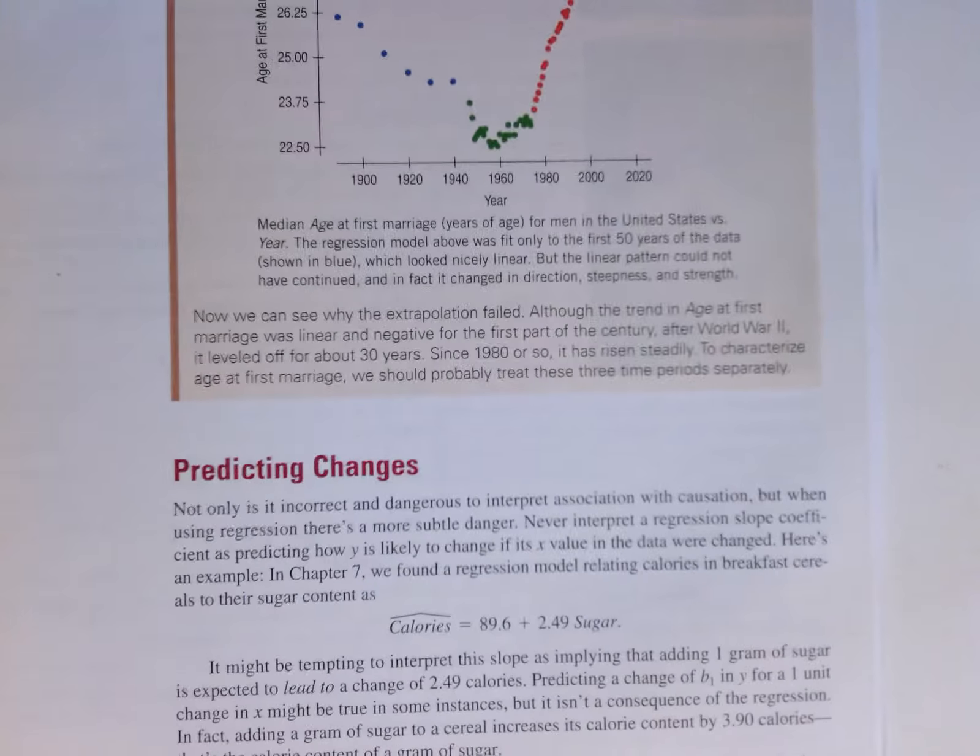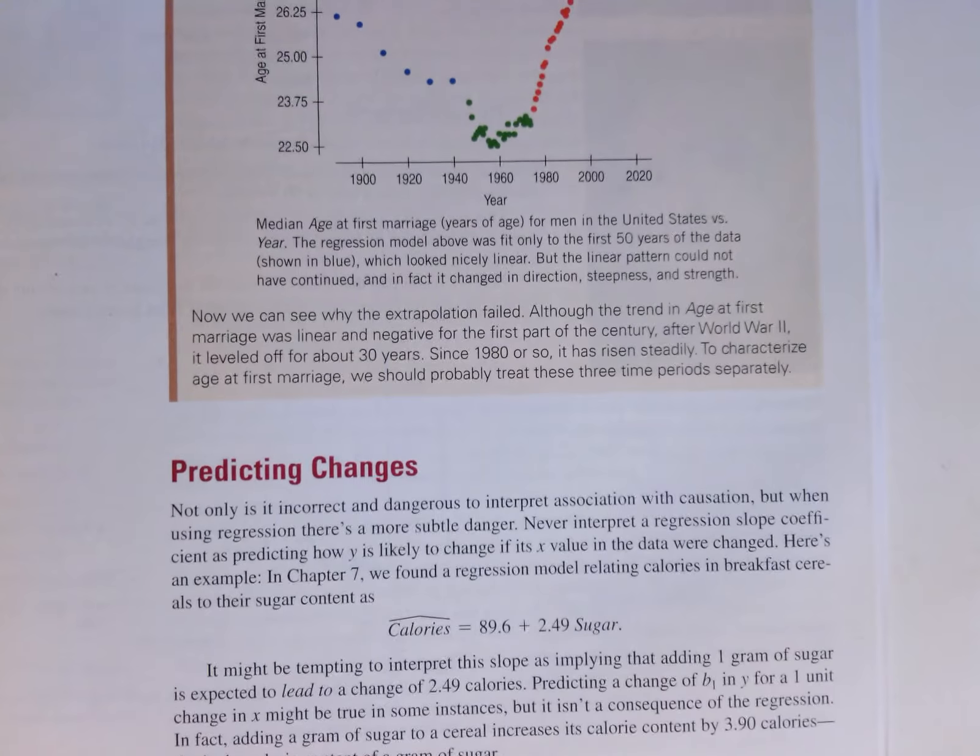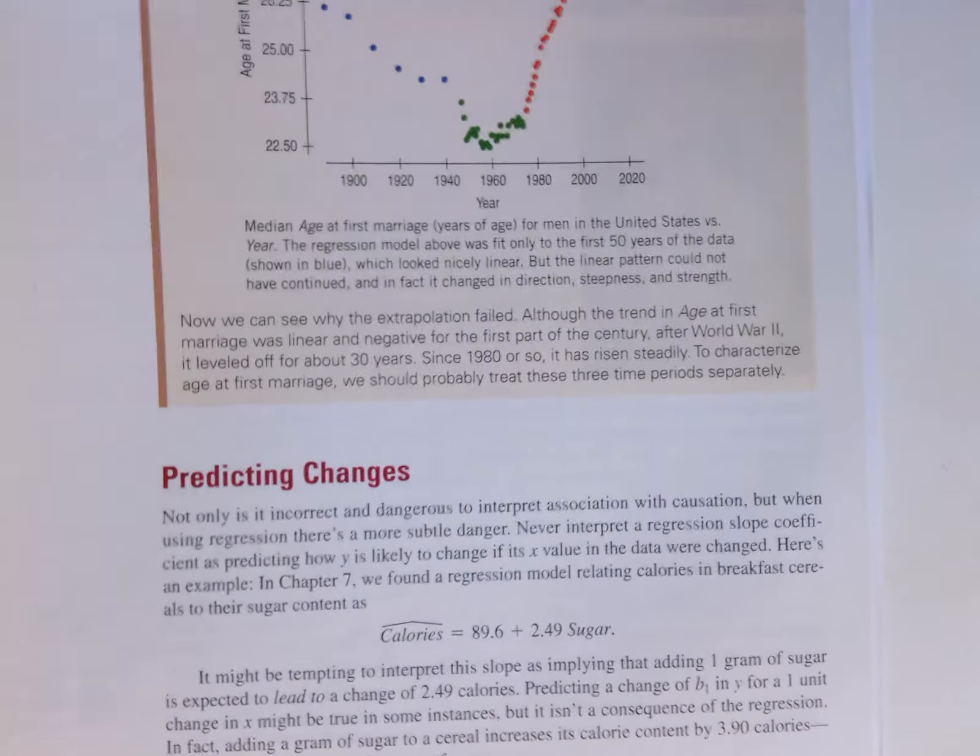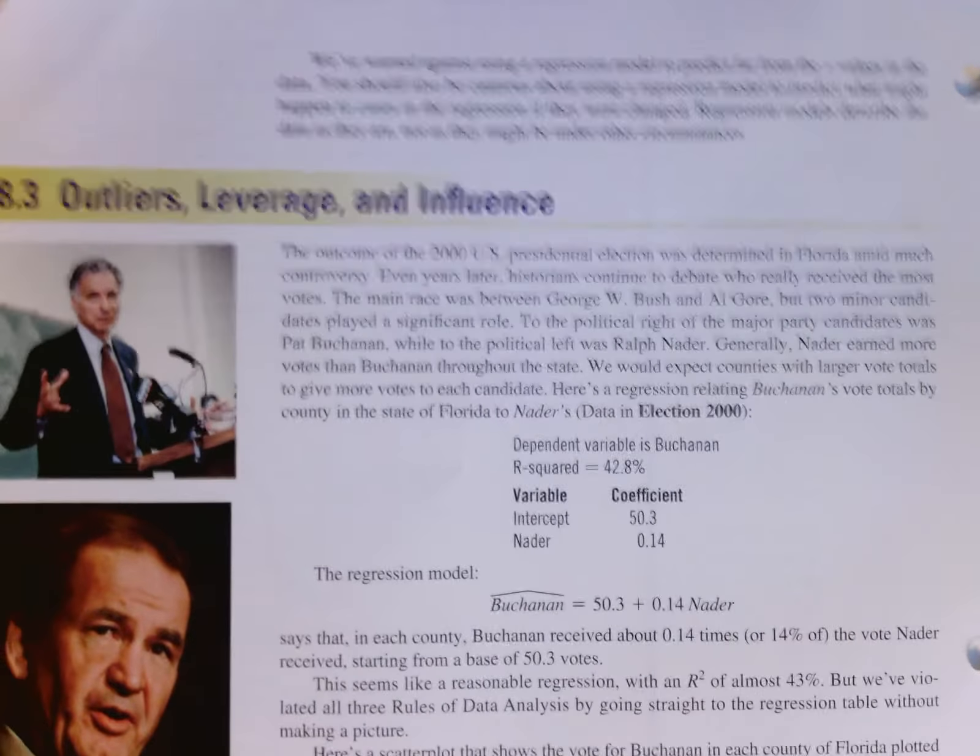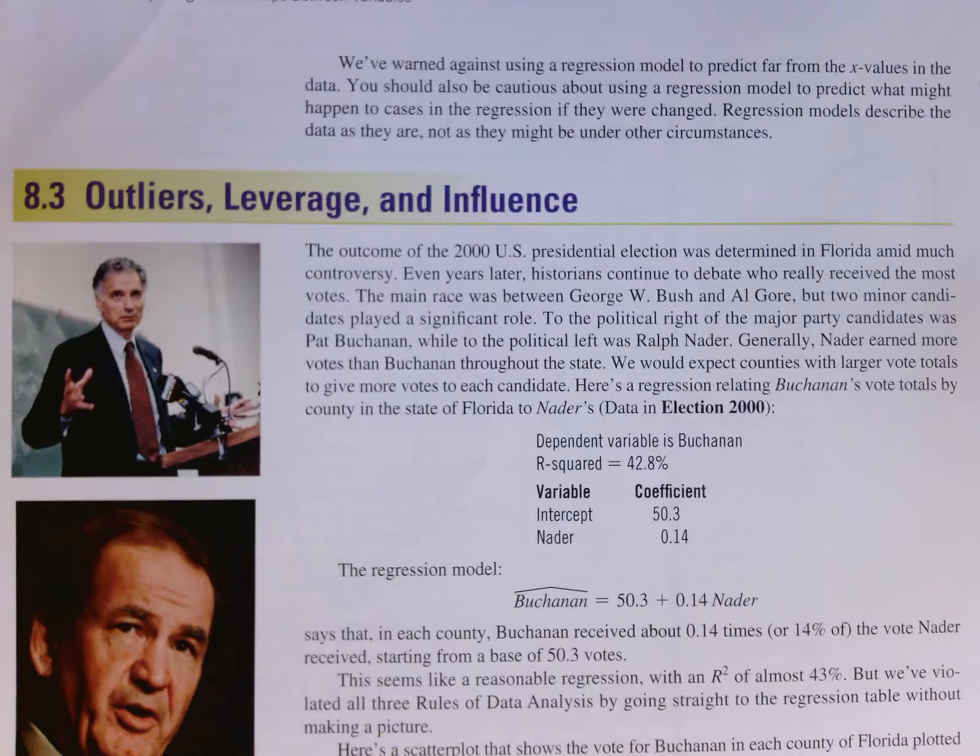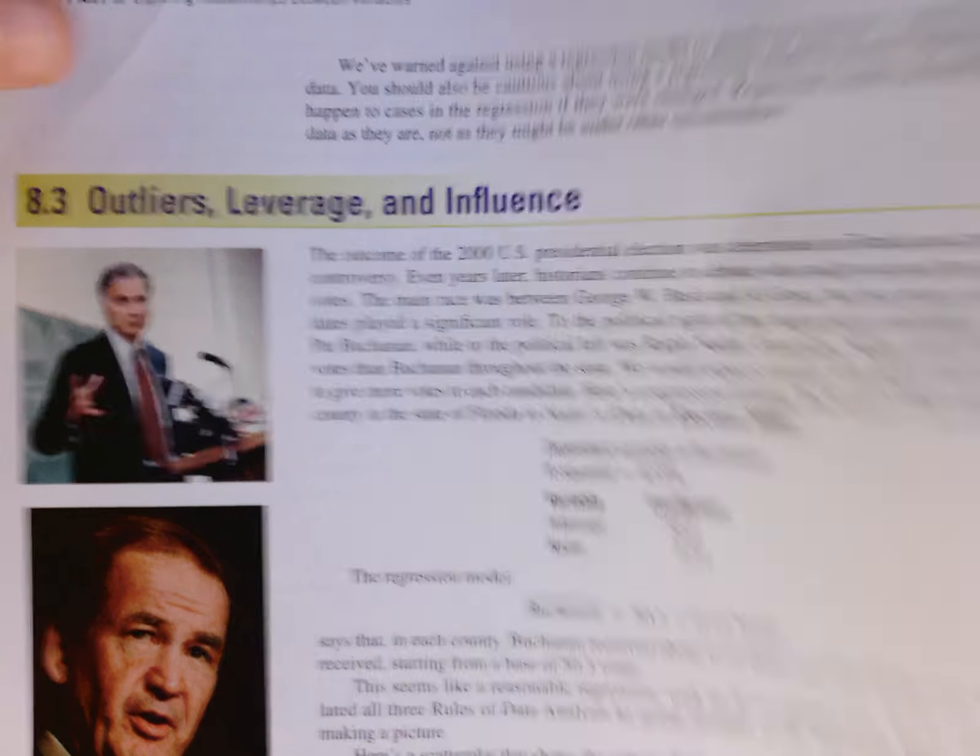So we also need to be careful about how we use these models in terms of predicting changes, and that's actually covered in this section. And then the idea that there are important observations, outliers, leverage, influence, comes out in this presidential voting example from Section 8.3.